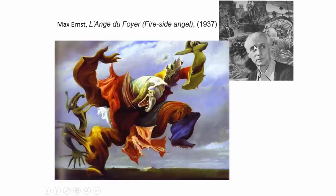Max Ernst was a surrealist who was German but lived in France for a while. He was arrested in France during World War II, then arrested by the Gestapo. He fled to the US with the help of Peggy Guggenheim, who helped lots of expat artists — she had a gallery and showed them in New York. He was married to Peggy Guggenheim for a little while, but then married Dorothea Tanning.